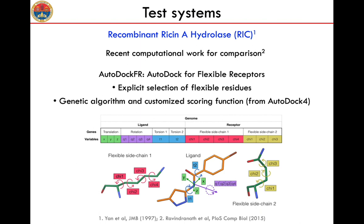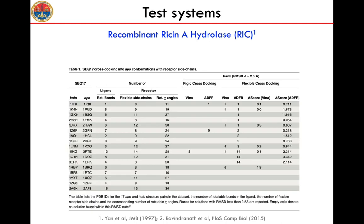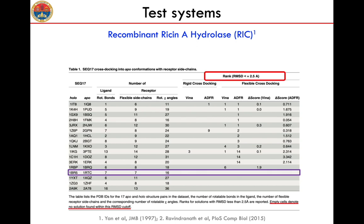A recent work by Forli and collaborators investigated the performance of a recently developed variant of AutoDock called AutoDock for flexible receptors, which includes explicit selection of flexible residues and a customized scoring function, in reproducing the poses of a series of systems including RISIM. Despite the minor conformational changes undergone by RISIM upon binding, it was one of the few systems for which no native-like pose was found using this new version of AutoDock, confirming that it's a very difficult target for these programs.